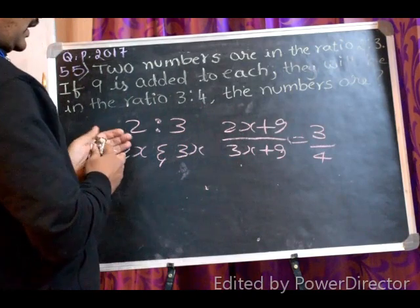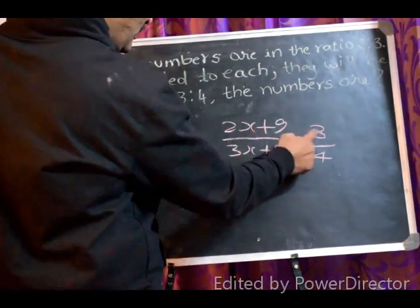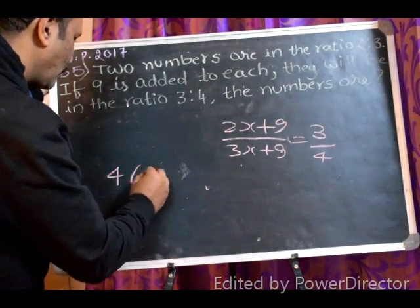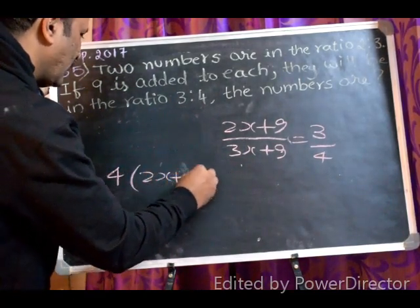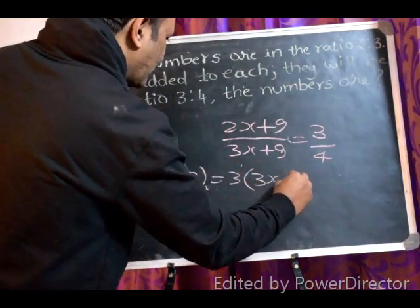This is the problem. So next step is, we have to cross multiply. So 4 into this and 3 into this. So write here, 4 into 2x plus 9, that is equal to 3 into 3x plus 9.